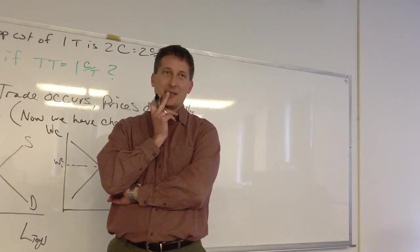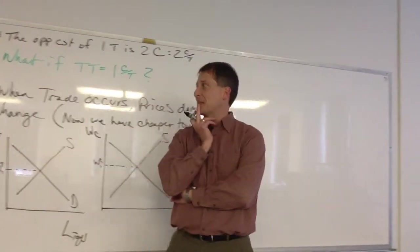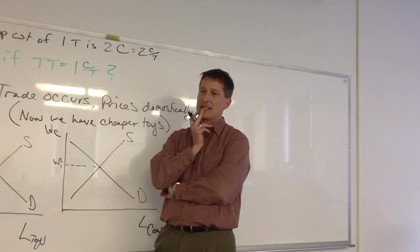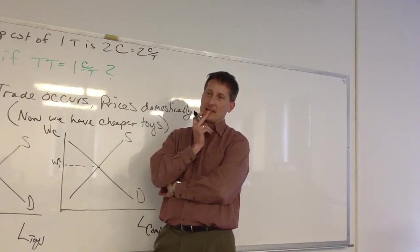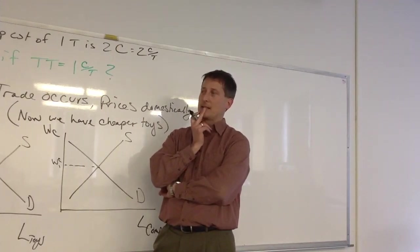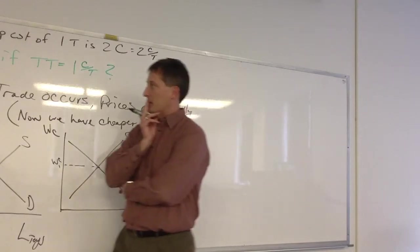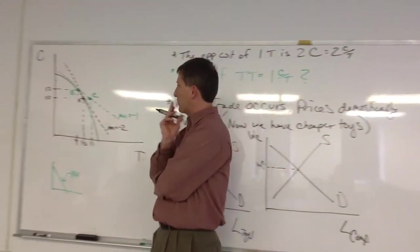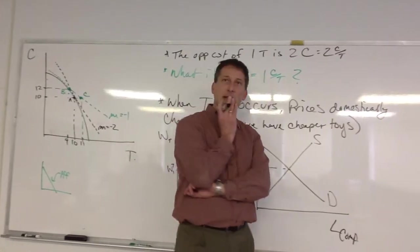And the last, very last thing. The derived demand part. So input demand is a derived demand income from the final product demand and the value of the marginal product. Okay. So if we start to think about what's happening to prices within each country,